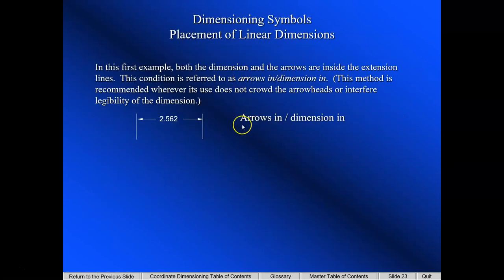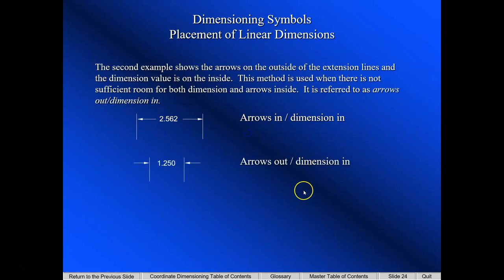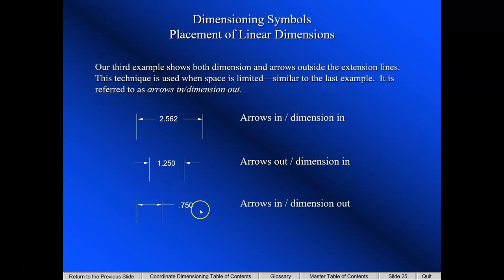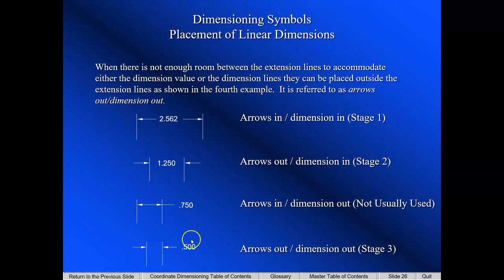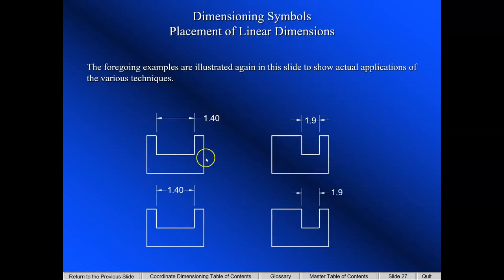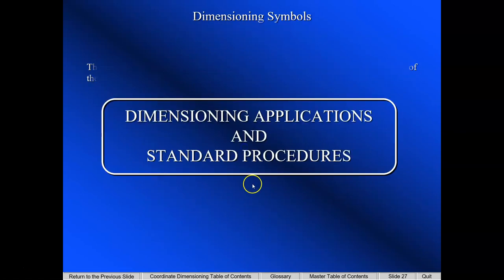Regarding placement of dimensions, AutoCAD gives us the ability to choose how we want to place the dimension. We can do arrows inside and dimension inside the extension lines, arrows outside and dimension inside, arrows inside and dimension outside, or arrows and dimension both outside. All four options are available in AutoCAD, and AutoCAD will help guide us with the proper selection. If the number is too big, it won't place it inside.